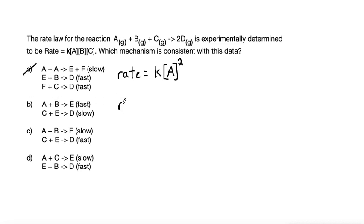For letter B, we can write that the rate is equal to some value of K times the concentration of C and E. Notice this one has E, which is a product of the first reaction and is consumed in the second reaction. That means this is an intermediate and we should not keep that in the overall mechanism. But let's come back to that one and try letter C, because we might be able to find one that just directly works without having to deal with an intermediate.